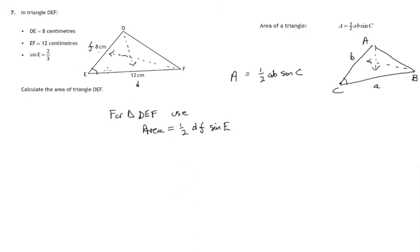It's a half of the two sides we know multiplied times the sine of the angle in between them. So there's a half of 12 times 8 times the sine of the angle in between, which we're told is two thirds.